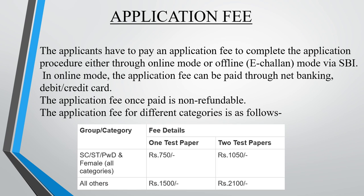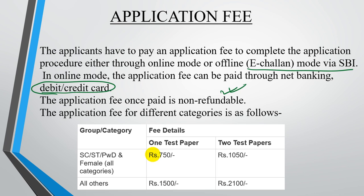The examination fee can be paid in two ways: online via debit card or credit card, or via e-challan through SBI. Note that the application fee once paid is non-refundable. For SC, ST, PWD, and female candidates, the fee is ₹750 for one test paper and ₹1050 for two test papers. For general category candidates, it is ₹1500 for one paper and ₹2100 for two papers.